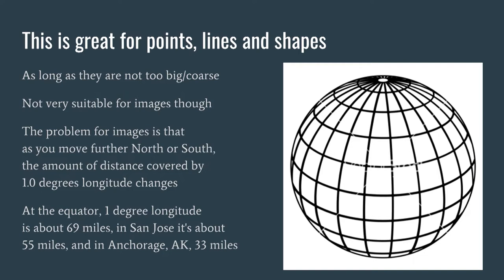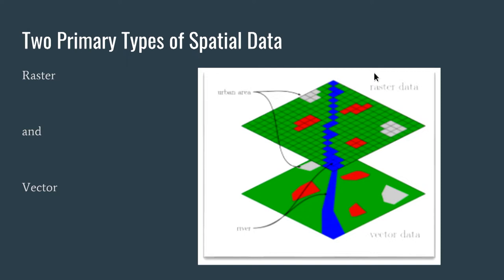As you go further north, a degree of longitude changes how much distance you move, and that makes the math hard. You can see it in the grid — the squares get closer together. There are also two types of primary spatial data that we work with.